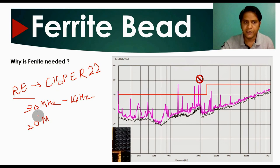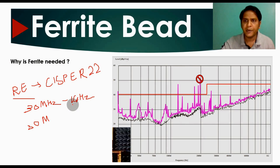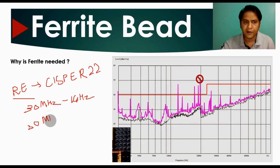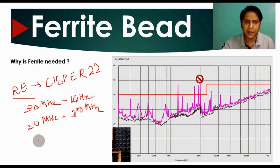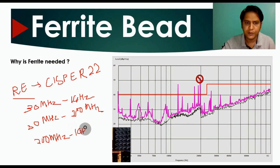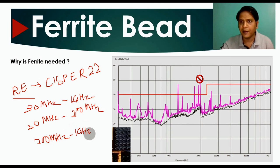For the CISPR 22 standard, the frequency range for radiated emission starts from 30 MHz to 1 GHz. This is subdivided into two parts: the first part is 30 MHz to 200 MHz, and the second part is 200 MHz to 1 GHz. We must limit our radiation below the limit line.